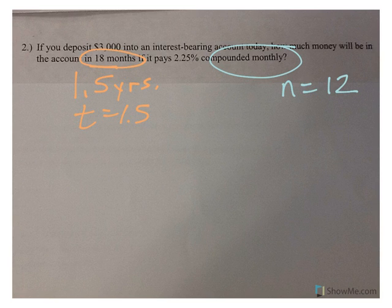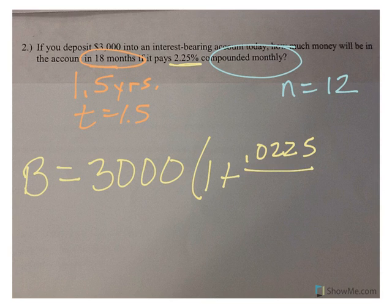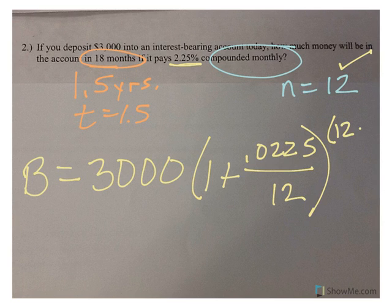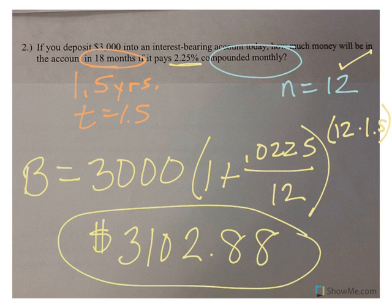So, I can go ahead and say my balance is going to be my principal, 1 plus my rate is 0.0225, because remember, percent must be changed to a decimal. I'm dividing by N, which is 12, and then taken to the 12 times T, 1.5. So, make sure you have N times T in your exponent. Again, order of operations if you are not plugging this all into your calculator at one time, but if you are plugging into your calculator all at one time, you get $3,102.88.